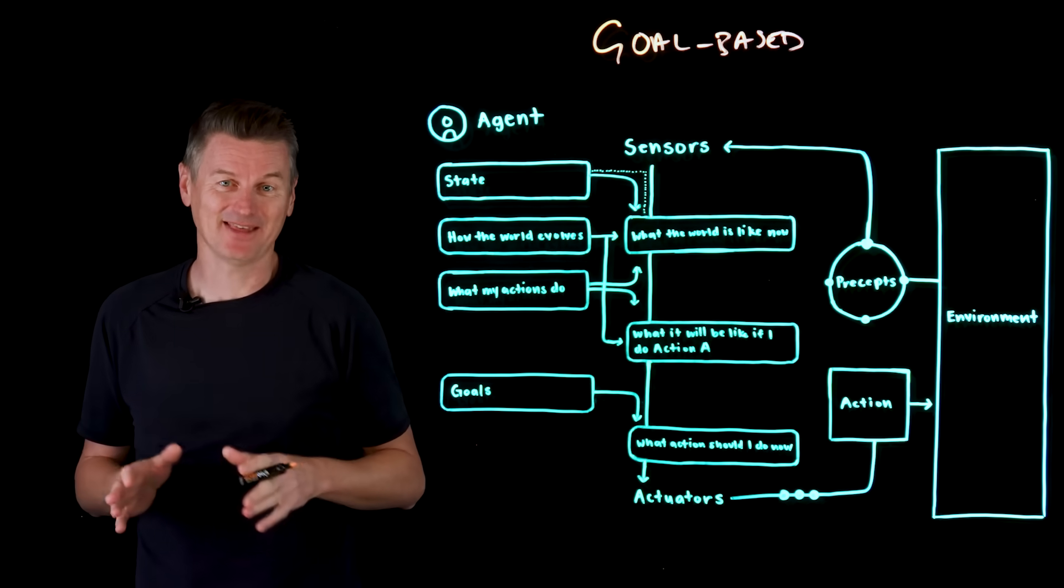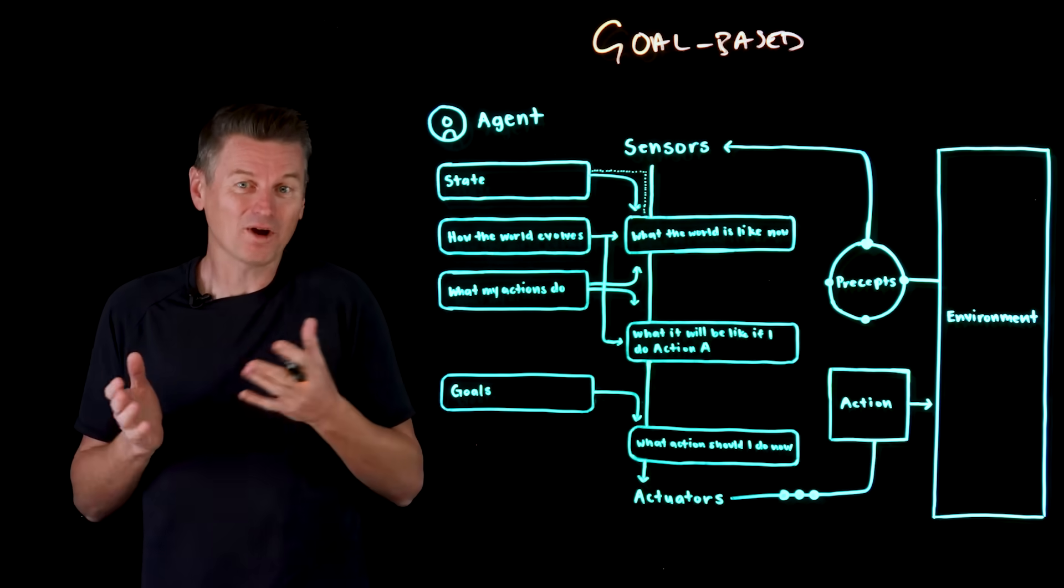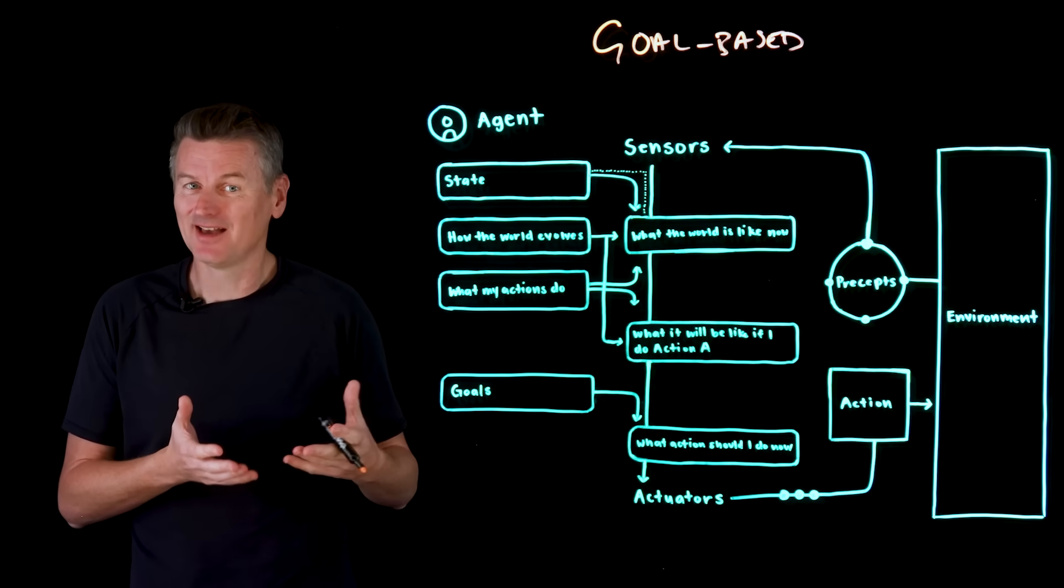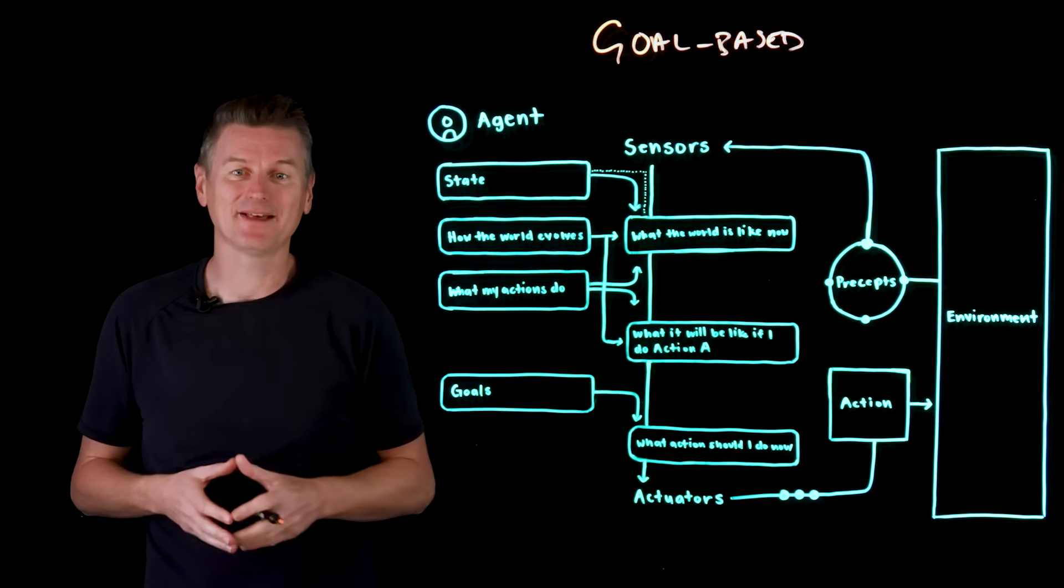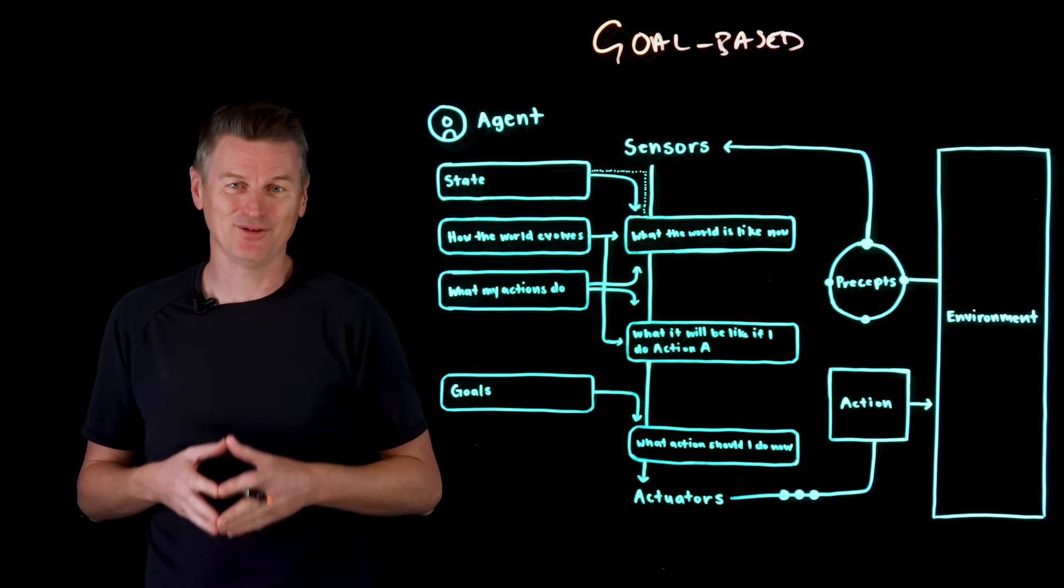That's a shift in decision-making. The agent isn't just asking what action matches this condition. It's now asking what action will help me achieve my goal, based on the current state and predicted future.